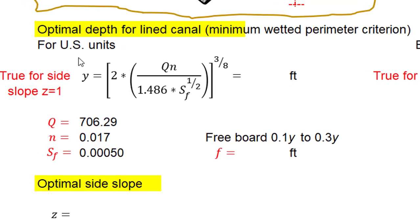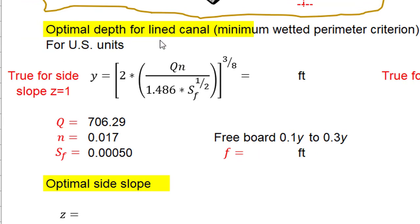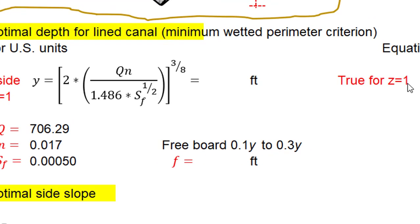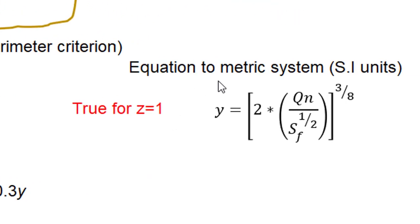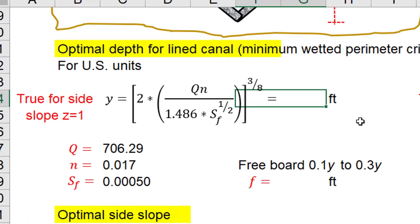Let's start by calculating the optimal depth for lined canal minimum wetted perimeter criterion. For the United States units we are using this equation that is true for side slope equal to 1. If you use the metric system or international system of units you should use this equation true for side slope equal to 1.